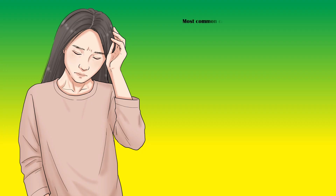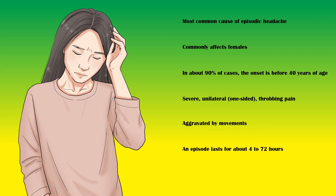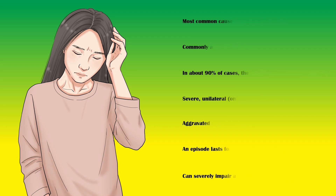Migraine headache is the most common cause for episodic headache, and it commonly affects females. In about 90% of cases, the onset is before 40 years of age. It causes a severe, unilateral or one-sided, throbbing pain which is aggravated by movement. An episode of migraine usually lasts for about 4 to 72 hours, and it can severely impair a person's day-to-day activities and may cause significant sleep disturbances.